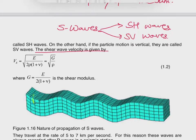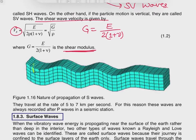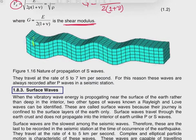The shear wave velocity is given by Vs = √(G/ρ), where G is the shear modulus of the material. The shear modulus G equals E divided by 2(1+μ), where E is the elastic modulus and μ is Poisson's ratio of the material.